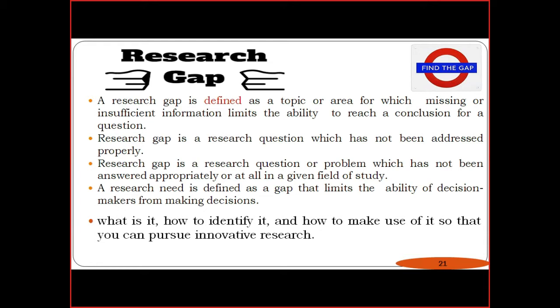After a researcher tentatively finalizes a broad area of research and tries to collect various papers, the search engines contain thousands of papers published every day. It is not possible to read each and every paper belonging to your topic or area of interest. While going through thousands of papers, you must curtail your scope and finalize a very small, keen area to identify the research component and research gap.